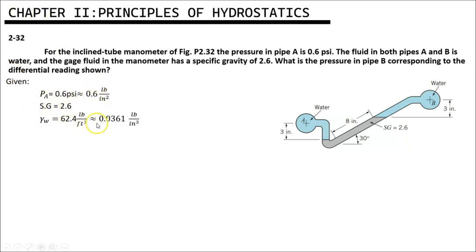And to get the value of 0.0361, we must divide 62.4 by 12 cubed.